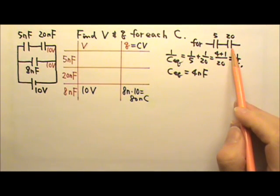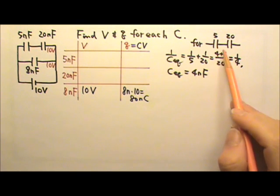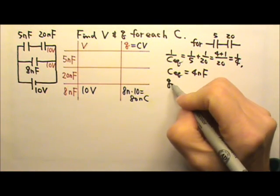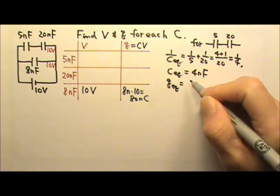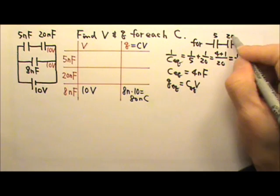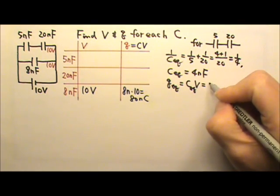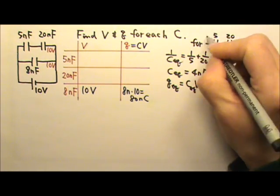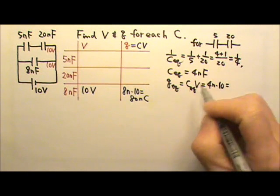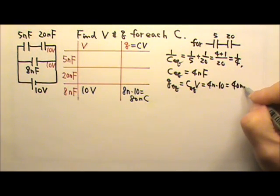Capacitors in series have the same charge, so it can be convenient for us to find the charge first. The Q equivalent is C times V. It's the C equivalent times the voltage they get. That's 4 nano times the voltage they get is 10 volts. So the Q equivalent is 40 nanocoulombs.